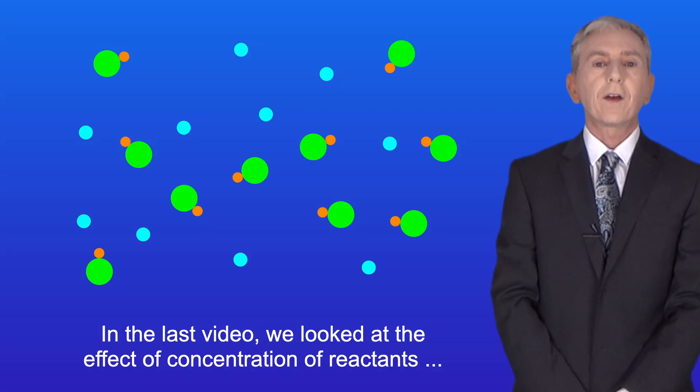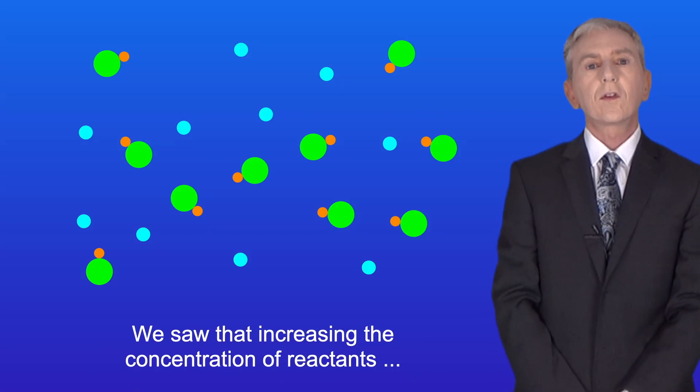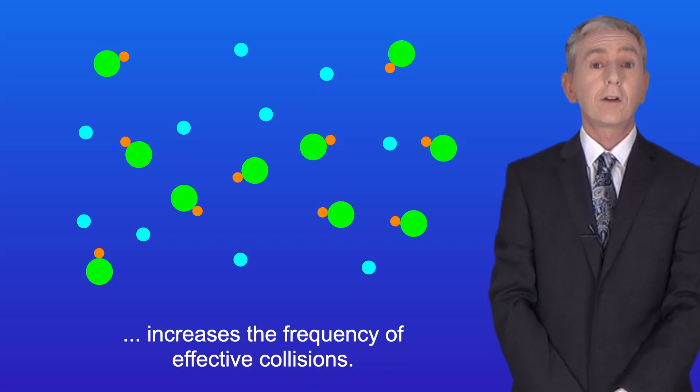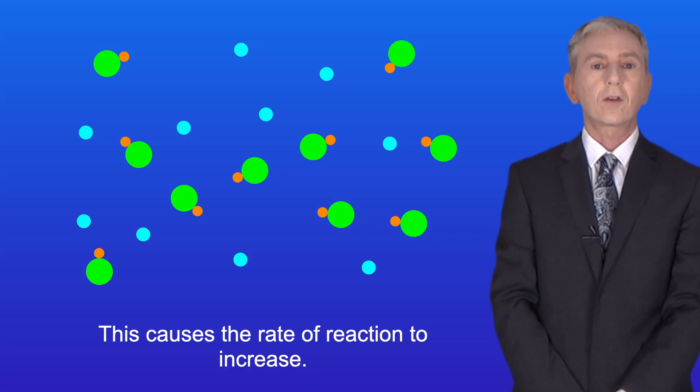In the last video we looked at the effect of concentration of reactants on the rate of reaction. We saw that increasing the concentration of reactants increases the frequency of effective collisions and this causes the rate of reaction to increase.